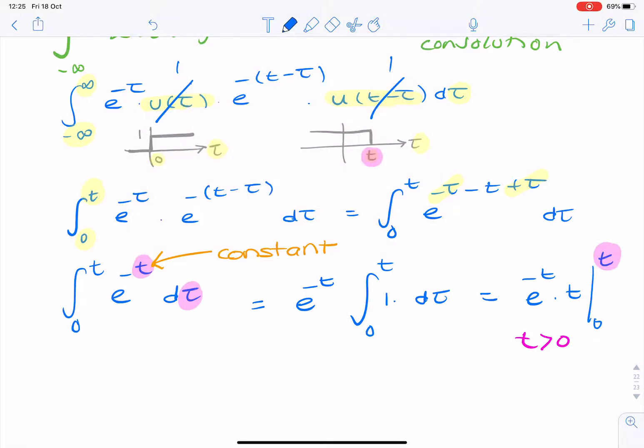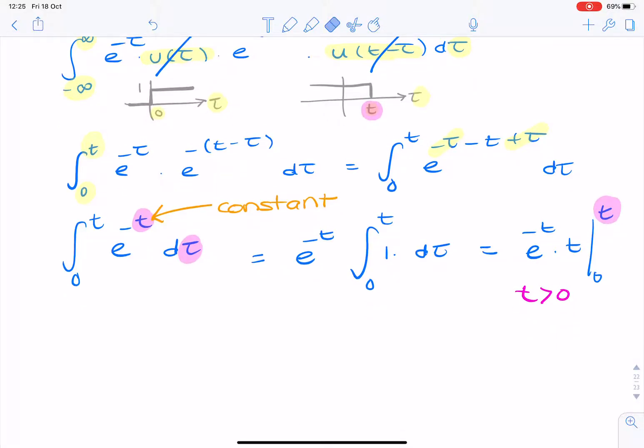So, the final step is to substitute the limits. So, we have e to the minus t times t. And because we have this condition, t greater than 0, we express that mathematically by saying u of t.